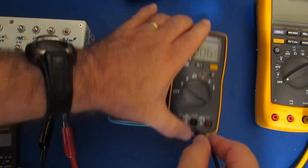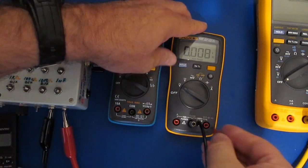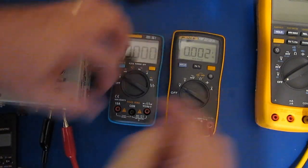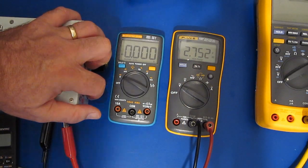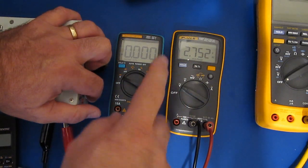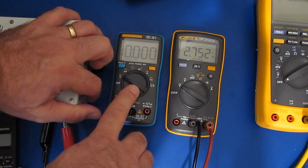This is the Fluke 107 which is also an averaging type meter. Again I would expect it to display at 2.751, so again quite accurate but it definitely shows that this is an RMS type meter.